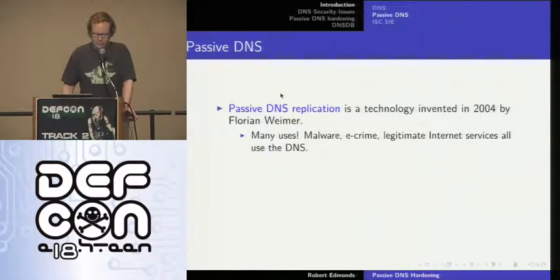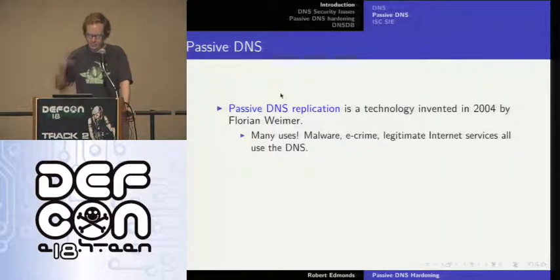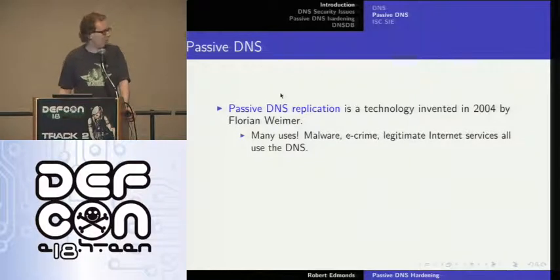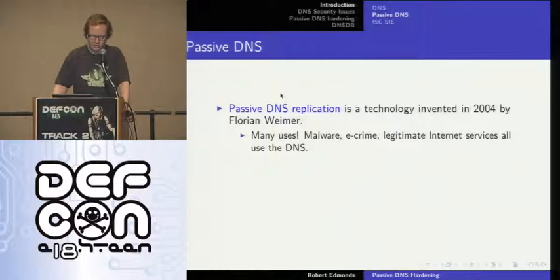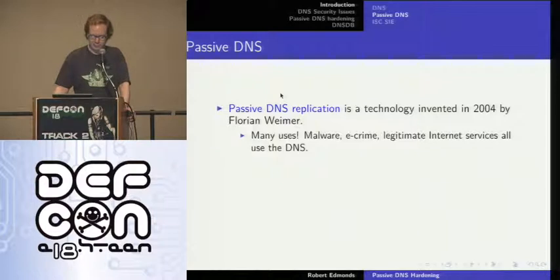Passive DNS replication was invented by Florian Weimer about six years ago. We found a variety of uses for the technique, and the most impressive use to date has been in combating malware and e-crime. Domain names are so cheap as to be basically free, but infrastructure numbering resources are not. The sharing of that infrastructure to host multiple e-crime campaigns makes it possible to track and link malicious uses of the DNS. Fast flux botnets light up the passive DNS like a Christmas tree.